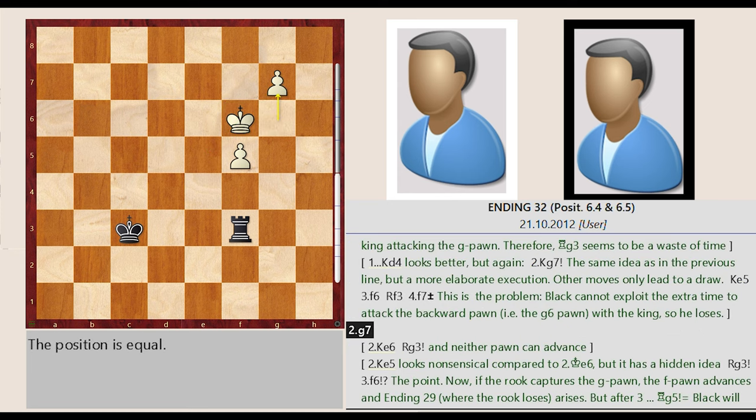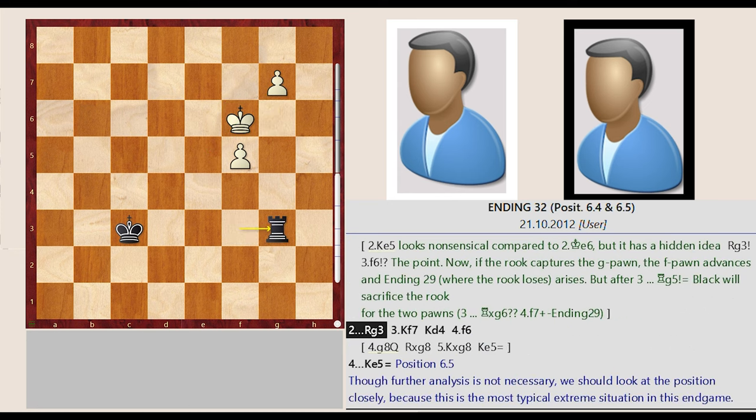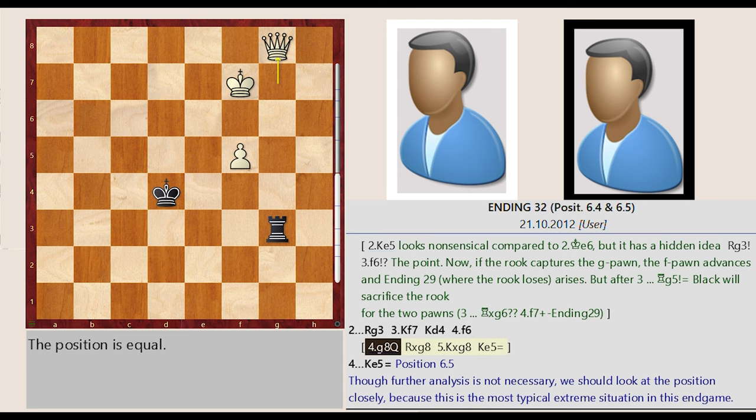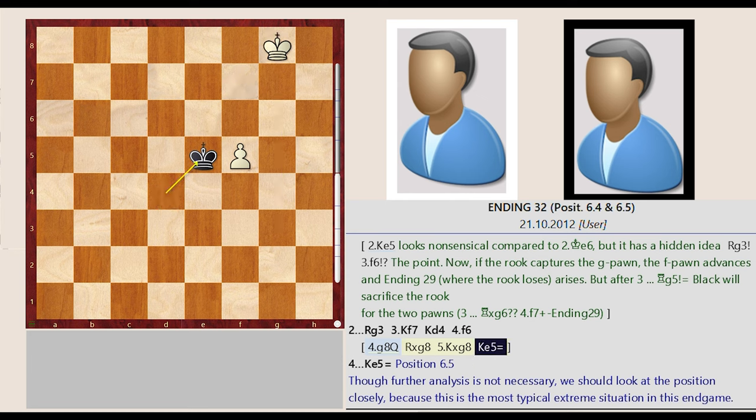G6 g7, Rook f3 g3, King f6 f7, King c3 d4, G7 g8, Rook g3 captures g8, King f7 captures g8, King d4 e5.